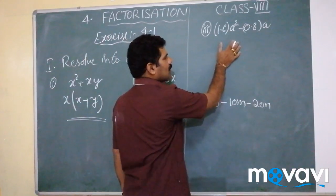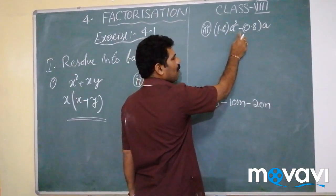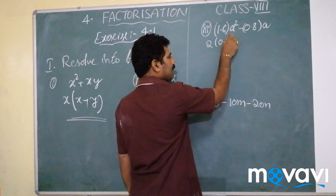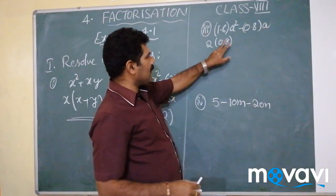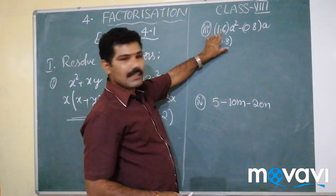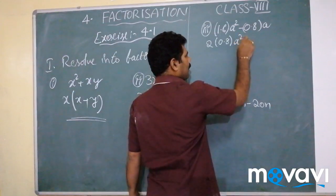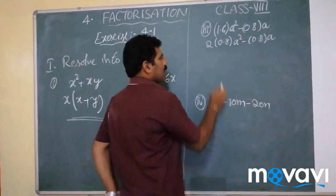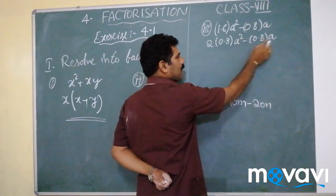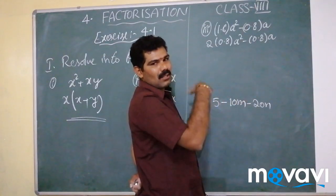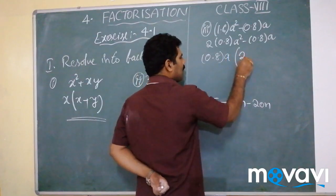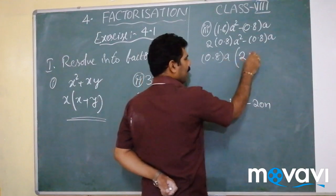Now coming to the third problem: 1.6a² - 0.8a. Here, 1.6 can be written as 2 × 0.8. In this expression, a is common and 0.8 is also common. The power of a is 2 in the first term and 1 in the second, so we take the lowest power. I will take 0.8a outside.